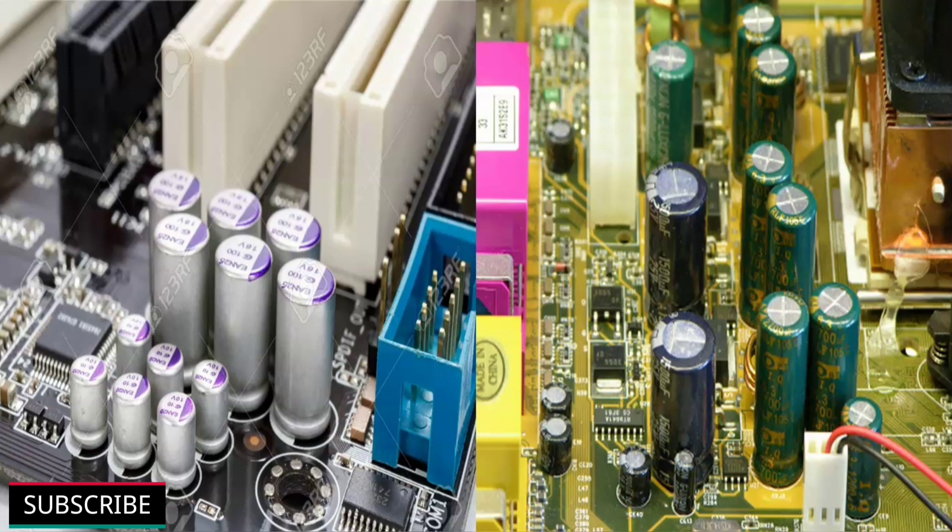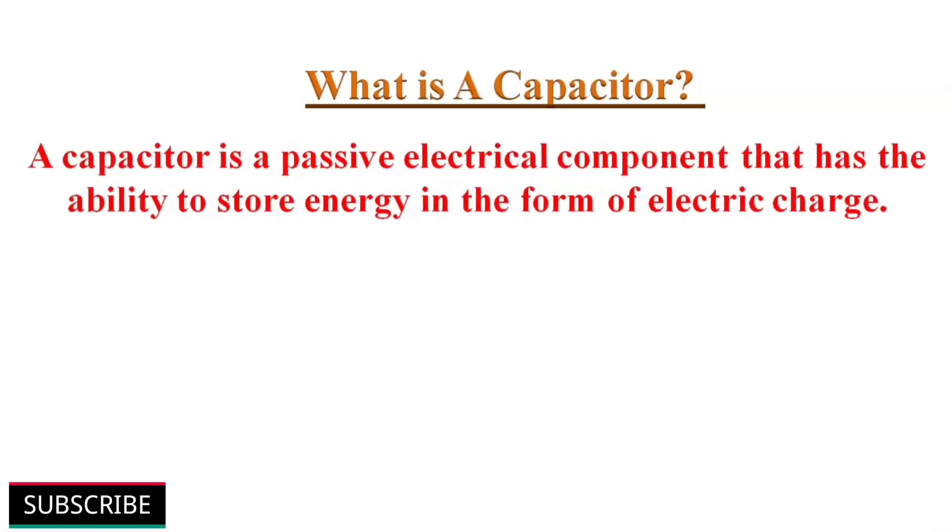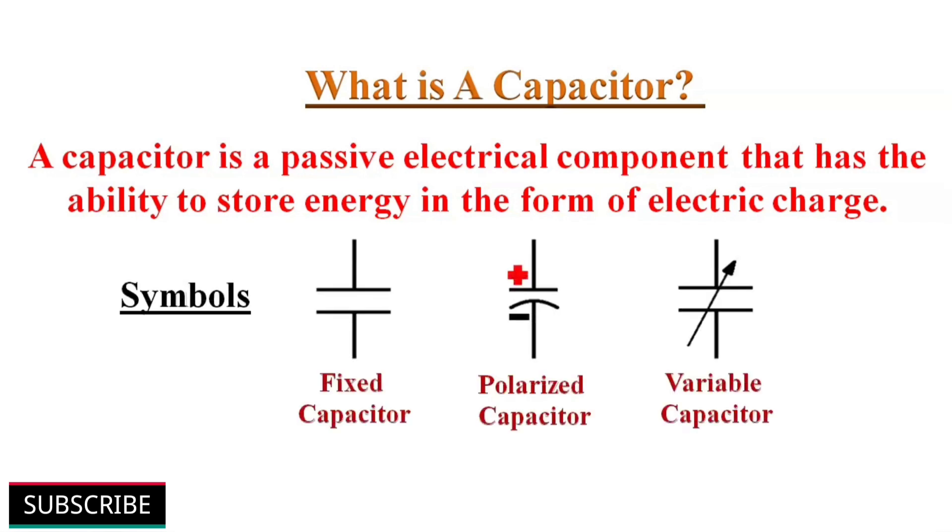Capacitors are one of the basic components most commonly used in electronic circuits. What is a capacitor? A capacitor is a passive electrical component which has the ability to store energy in the form of an electrical charge. These are the commonly used capacitor symbols.